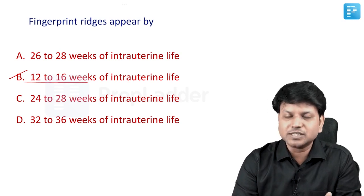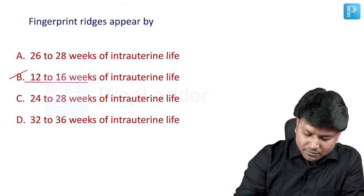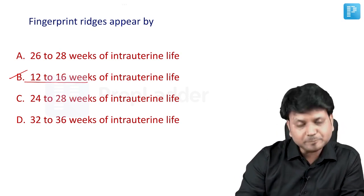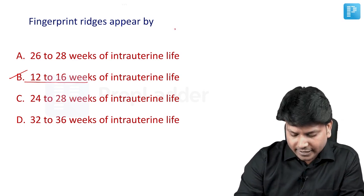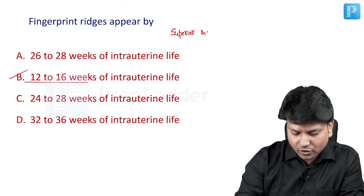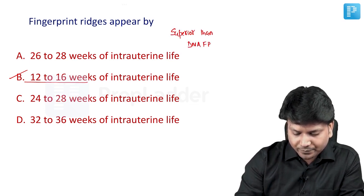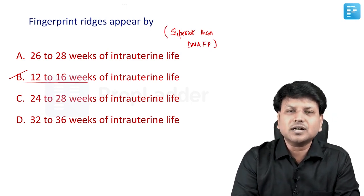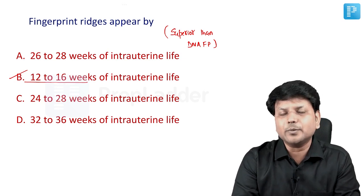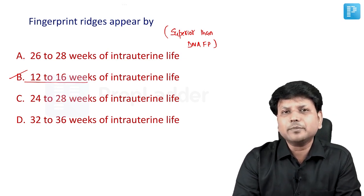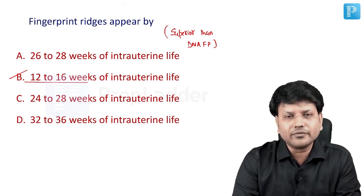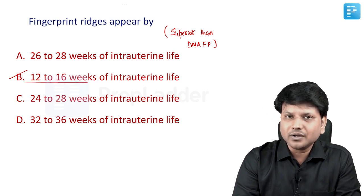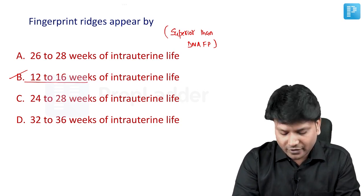Once fingerprints are formed, they are permanent and do not change. Remember, dactylography is superior to DNA fingerprinting because even with monozygotic twins the fingerprints will be different. So if you want to differentiate monozygotic twins, dactylography is the best method over DNA fingerprinting.